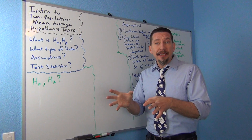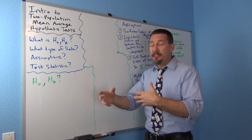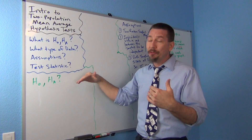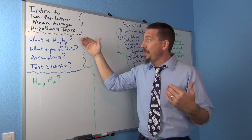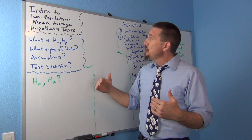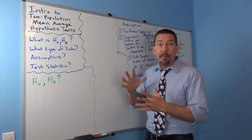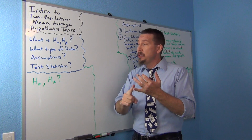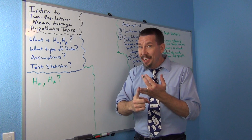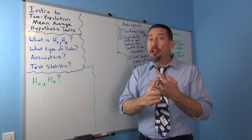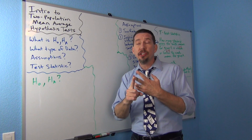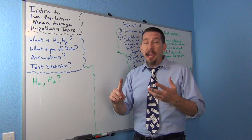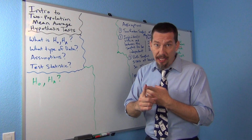With these more advanced hypothesis tests, there are sort of four key things to memorize or at least to know for these tests. For a two population mean average hypothesis test, we want to know the null and alternative hypothesis, what type of data we need, what the assumptions are, and what the test statistic might be.